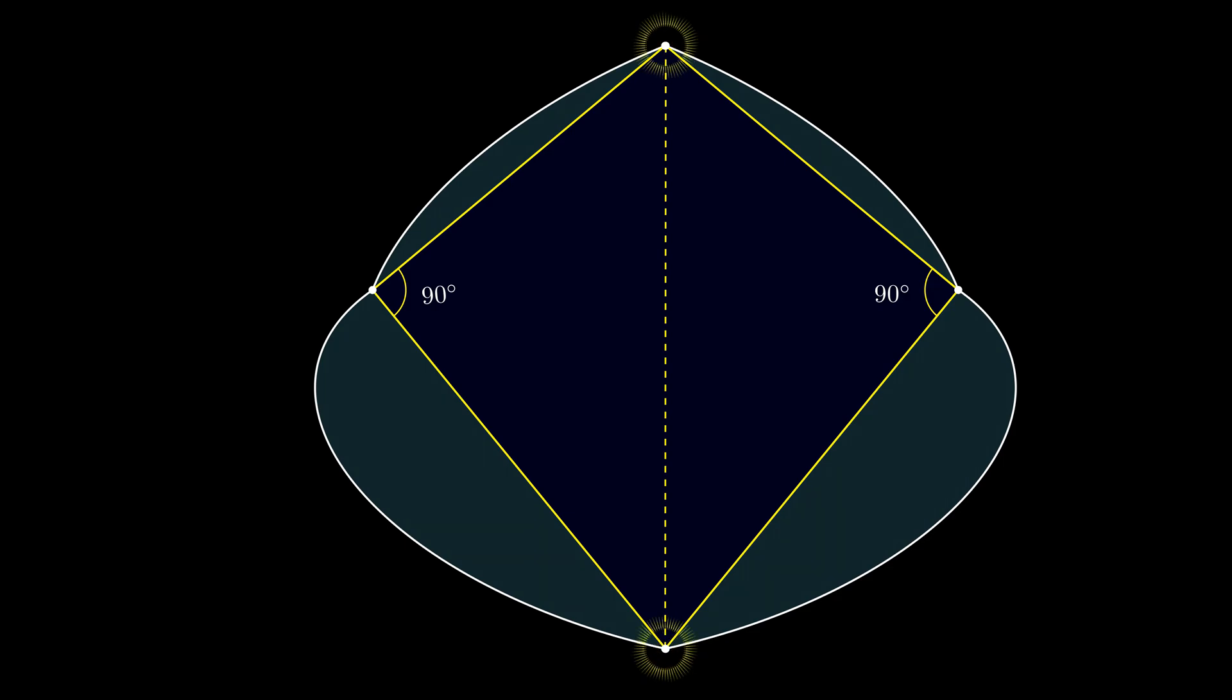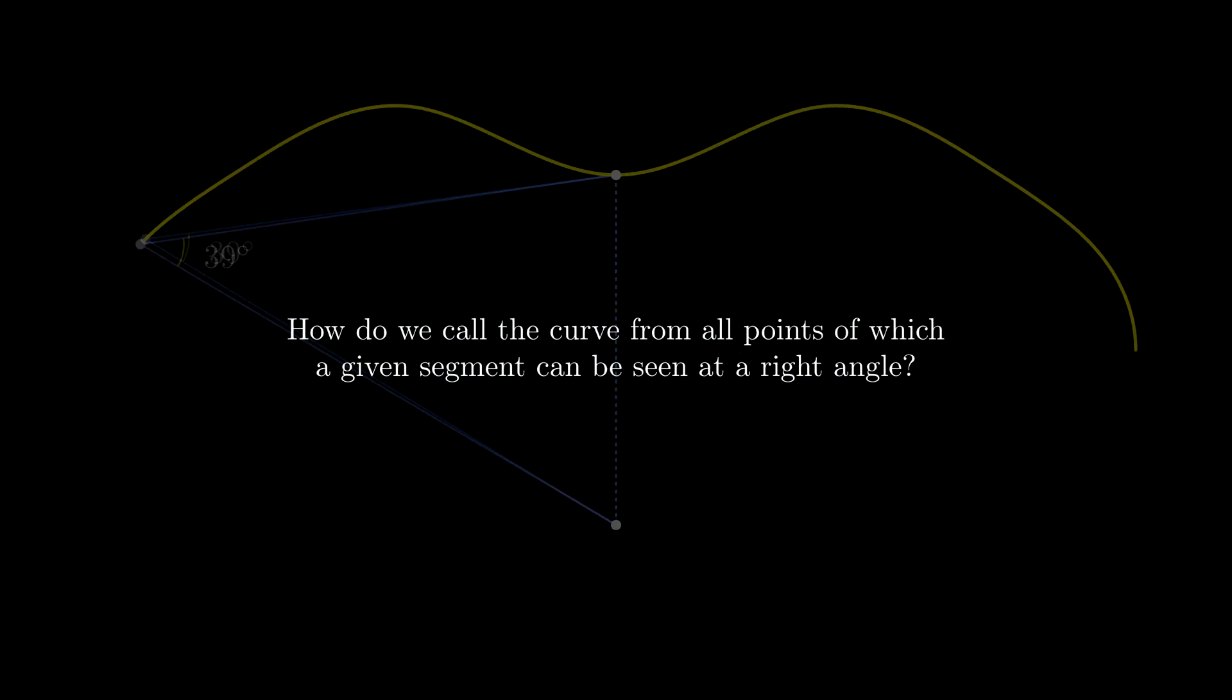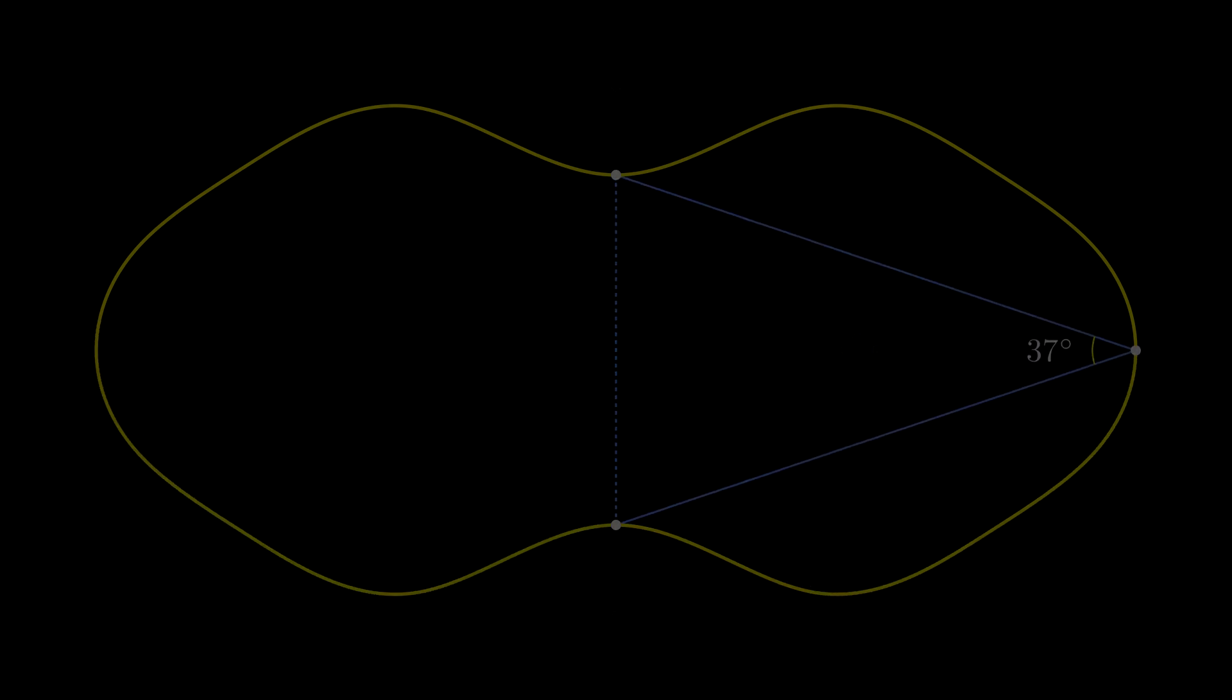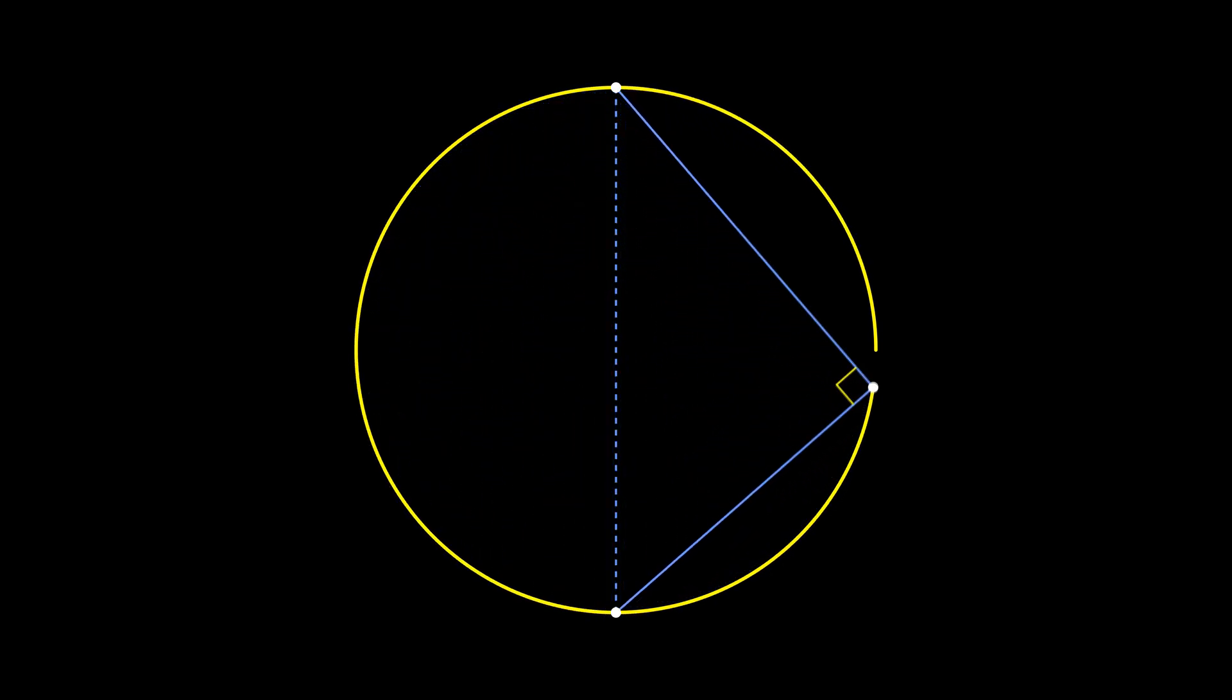All we are left to do is to sum it all up. How do we call the curve from all points of which a given segment can be seen at a right angle? It's a circle, my friends. The problem is solved.